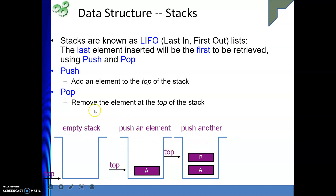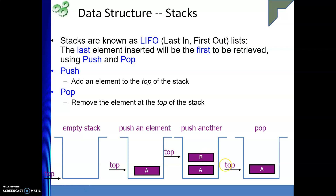Now let's pop — we remove the topmost element, which is B. After popping, the stack has only element A. If I then push C, C goes on top of A and top points to C. If I pop C, it comes out. Then if I pop again, A is removed and the stack becomes empty, with top pointing to nothing.